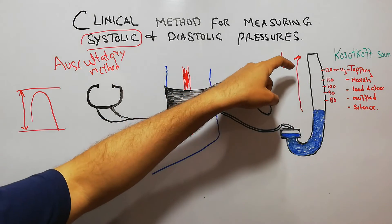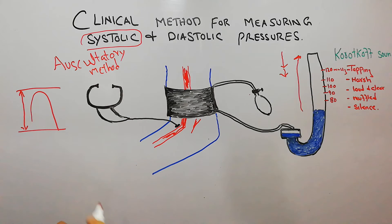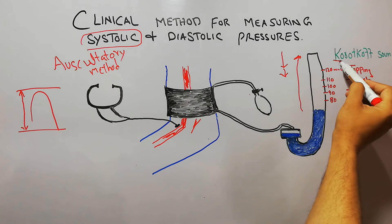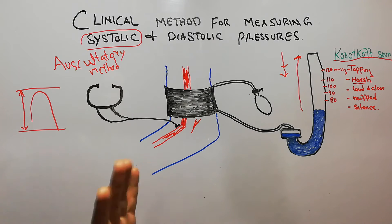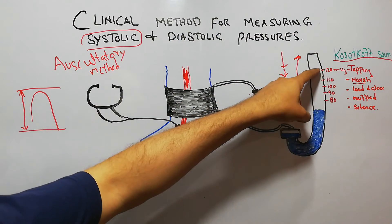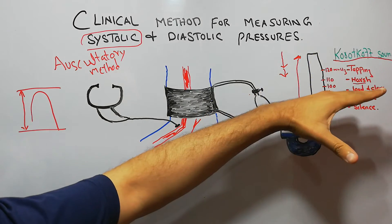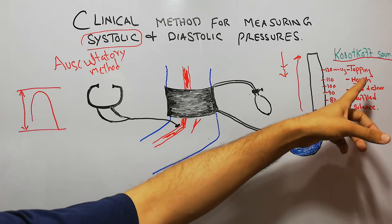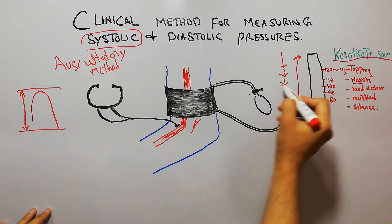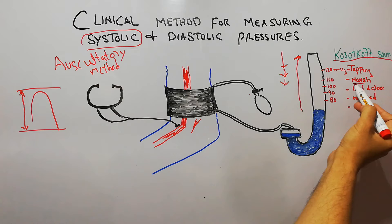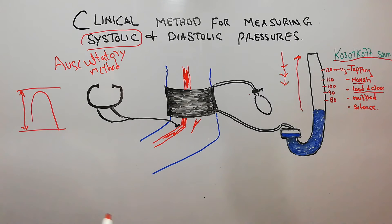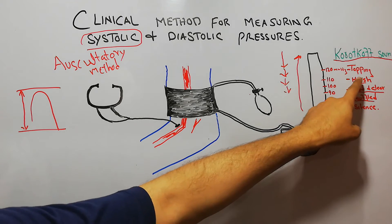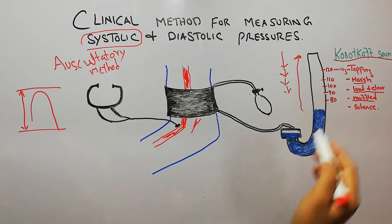As the pressure is decreased further, the tapping sound becomes a harsher sound. These sounds are basically known as Korotkoff sounds. They start at the level of 120 mmHg, initially tapping in character. As the cuff pressure is gradually decreased, the character of the sounds becomes a bit harsher, then with further decrease they become loud and clear, and with further decrease they become muffled.